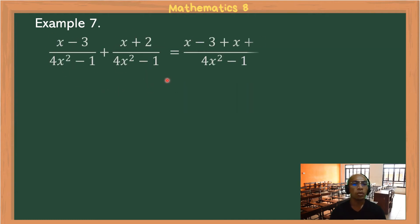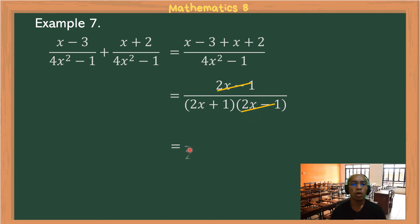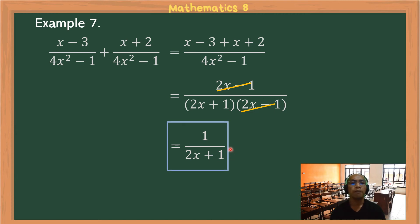Example 7: Copy the common denominator. The numerator simplifies by combining like terms: x + x = 2x, and −3 + 2 = −1, giving (2x−1). The denominator is a difference of two squares: √4 = 2, √(x²) = x, √1 = 1, factoring to (2x+1)(2x−1). The common factor (2x−1) cancels, leaving the answer 1/(2x+1).